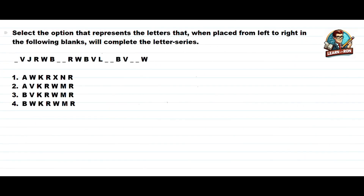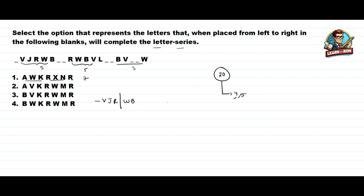Let's see the next question — a letter series. First, let's count the letters: there are 5 here, 5 here, 3 here, and in the answer options: 3, 3, 1, and 7 — totalling 20 letters. With 20 letters, we can divide in 4-letter or 5-letter format. Checking the 4-letter format: 1, 2, 3, 4 — there's no clear pattern there.